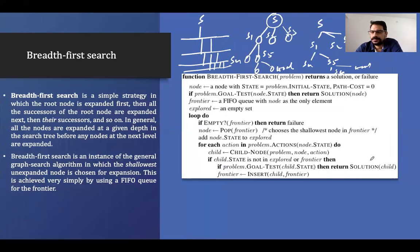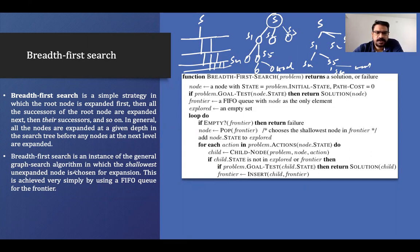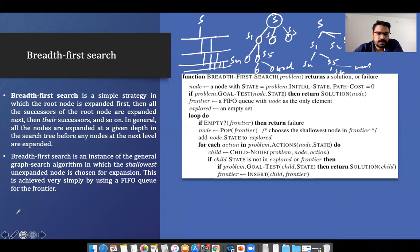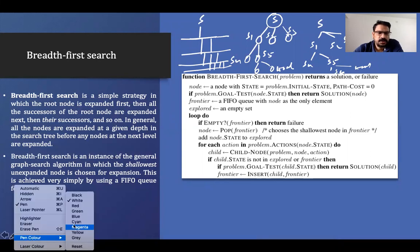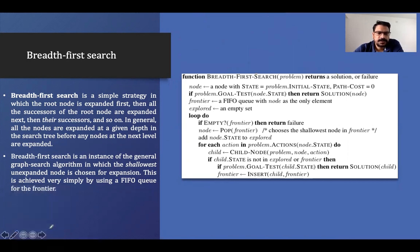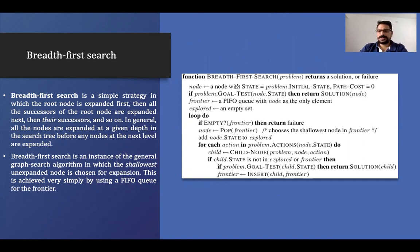BFS will complete the algorithm and return a solution. Breadth First Search is an instance of the general graph search algorithm in which the shallowest unexpanded node is chosen for expansion. This is achieved by using a First In First Out (FIFO) queue for the frontier.